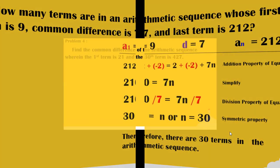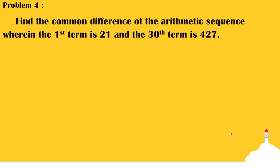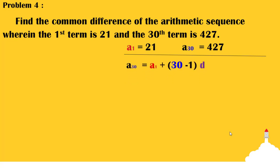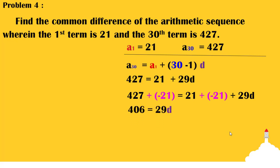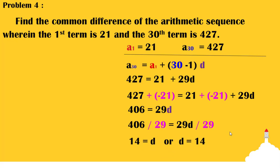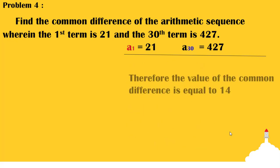Problem number 4 asks for the value of the common difference given the first term and the value of the 30th term. Using the arithmetic sequence formula and substituting, we have 427 is equal to 21 plus 29d. Applying the addition property of equality, we get 406 is equal to 29d. By the division property of equality, dividing both sides by 29, we simplify to get d is equal to 14. Therefore, the value of the common difference is 14.